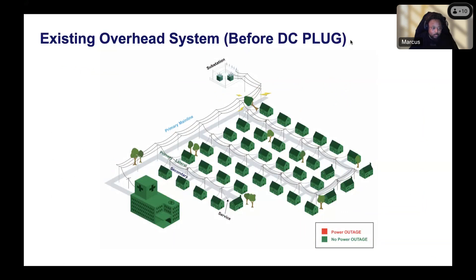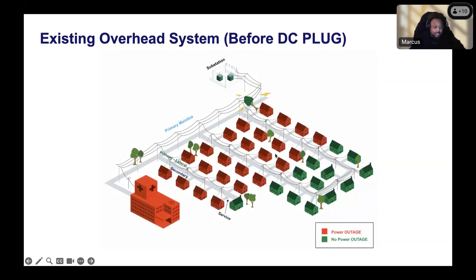This is what the overhead system looks like right now in your area. A lot of the lines are overhead, which can cause reliability issues for our customers. As you can see in the animation, a tree fell on a power line toward the northwest corner of the screen, and that caused a power outage for every single house as well as the hospital. That is why we have started this program — so we can underground those lines and prevent this from happening anymore.